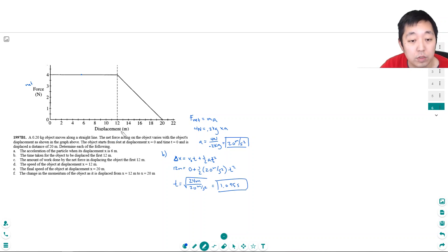Okay, so that's how long it took to go the first part. Part C: the amount of work done by the net force in displacing the object the first 12 meters. Work is force times distance. I feel like we've done this problem before—I've seen this problem several times. So I apologize if we've done this before, but the last part is the momentum question which we'll get to.